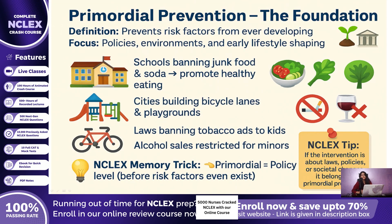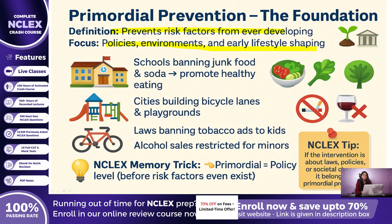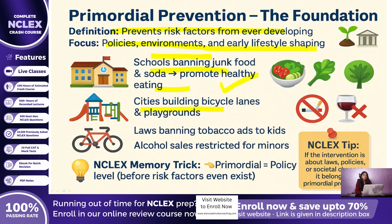Primordial Prevention — the foundation before everything. Let us begin with the most basic level, Primordial Prevention. Think of this as prevention at the roots of society, where the goal is to stop risk factors from even appearing in the first place. It is broader than health education — it is about shaping environments, lifestyles, and policies, so that people never even develop unhealthy habits. For example, a school system that bans junk food and soft drinks in its cafeteria and instead promotes fruits, vegetables, and milk — that is primordial prevention. Another example is a city designing safe bicycle lanes and playgrounds so that children develop active lifestyles early on. National policies that ban tobacco advertising to children or laws that limit alcohol sales to minors are also part of primordial prevention.